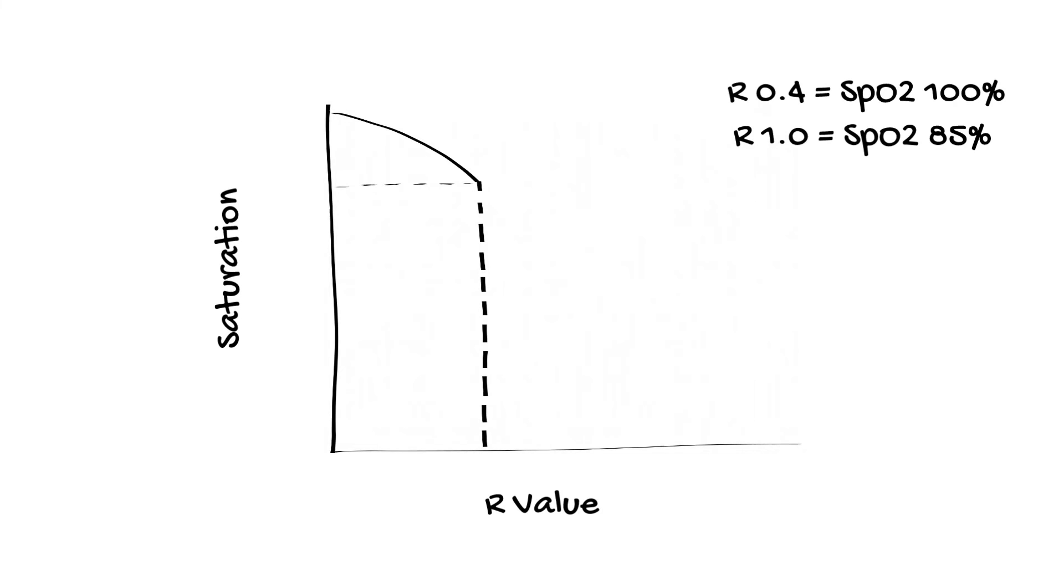This is the reason why pulse oximeters are calibrated down to a saturation level of around 75%. Beyond this point, the curve is extrapolated as it's very hard to get ethics approval or volunteers willing to become this hypoxic.